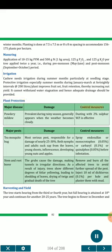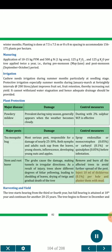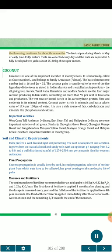Plant Protection. Major Disease — Powdery Mildew: Prevalent during rainy season, generally appears when weather becomes cloudy. Dusting with 2% sulfur WP is effective. Major Pests — Mosquito bug: the most serious pest, responsible for nearly 25–30% damage; both nymphs and adults suck sap from leaves, young shoots, inflorescences, developing young nuts and apples. Spray endosulfan or monocrotophos 0.05%, or carbaryl 0.1%, or quinalphos 0.05% before infestation. Stem and root borer: grubs cause damage by making tunnels in irregular directions; trees show foliar yellowing, shedding of leaves, drying of twigs and gradual death. Remove and burn all affected trees; inject 10 ml of dichlorvos 0.1% per hole and plaster with mud. Harvesting and Yield: The tree starts bearing from the 3rd or 4th year, but full bearing is attained at the 10th year and continues for another 20–25 years. The tree begins to flower in December; flowering continues for about 3 months; fruits ripen during March to May or early June. Fully mature fruits are collected every day and nuts are separated. A fully developed tree yields about 25–30 kg of nuts per annum.